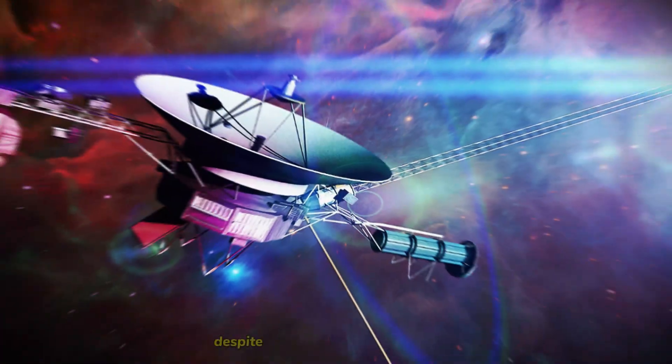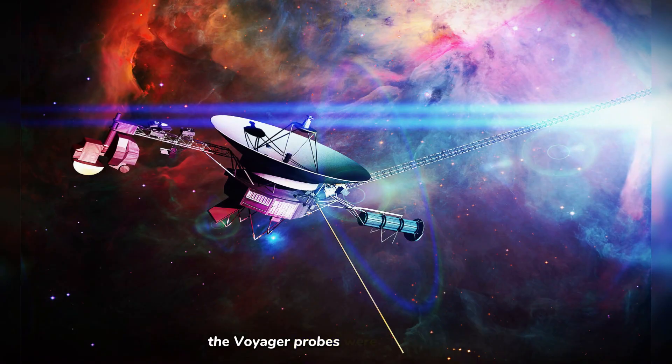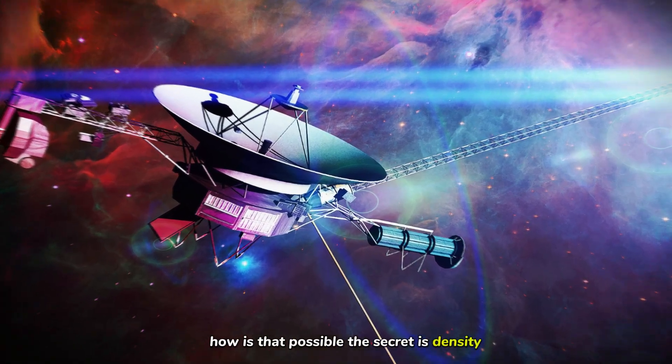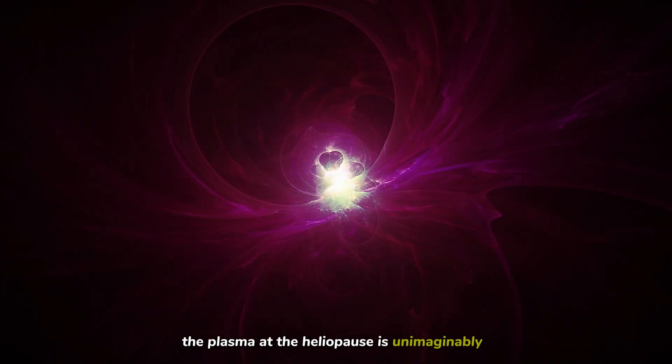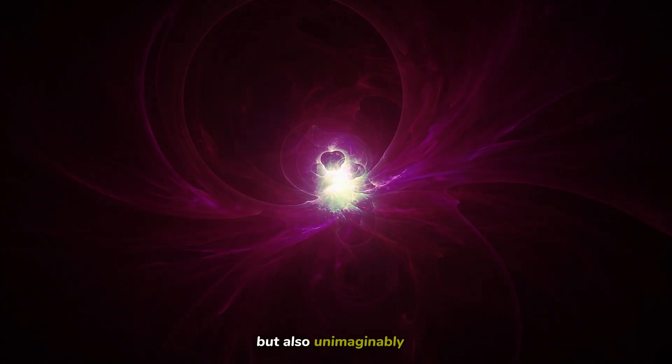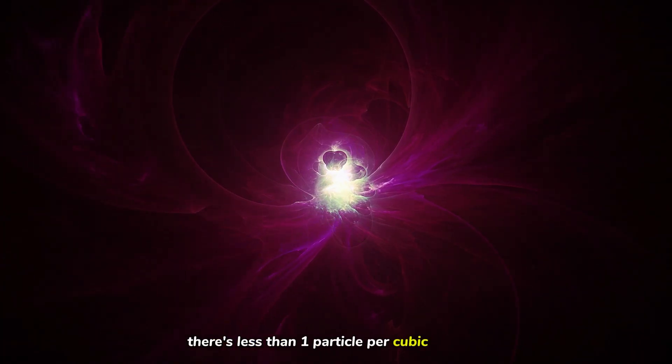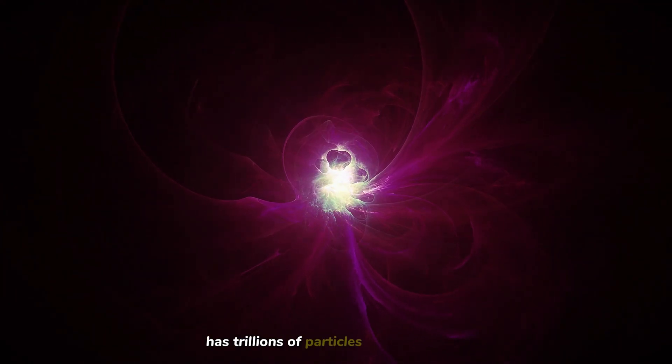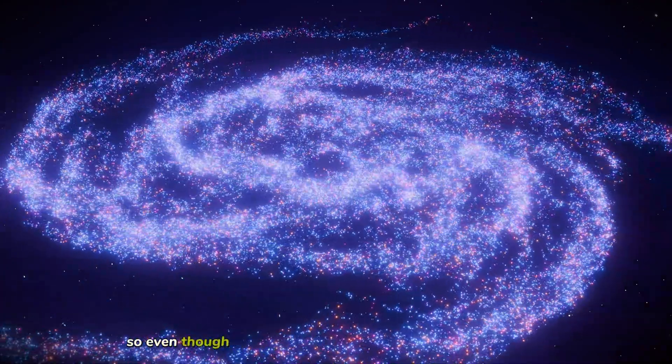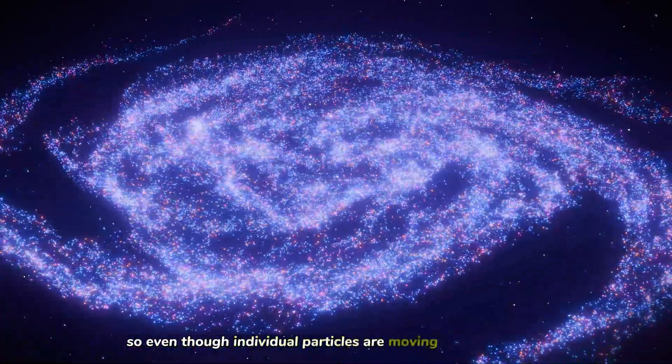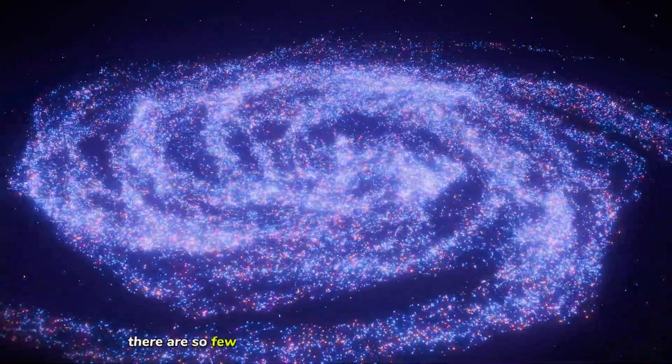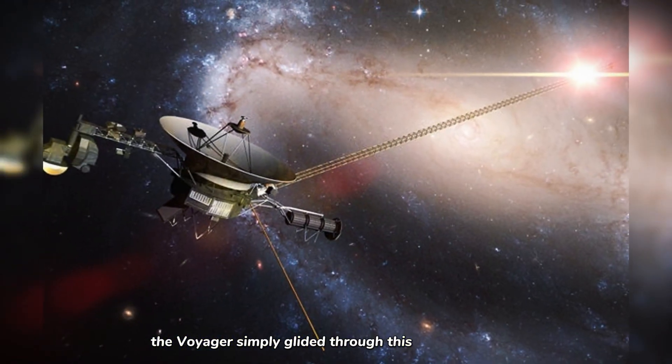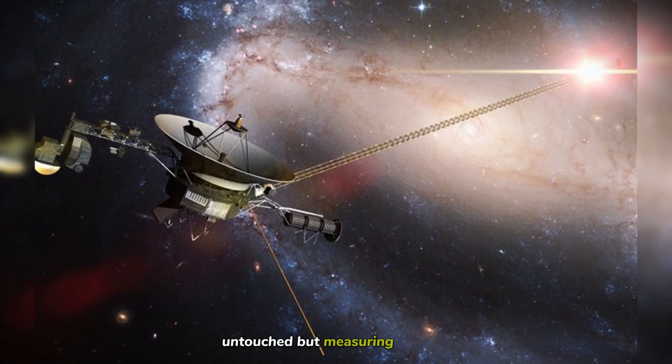But here's the strange part. Despite these apocalyptic temperatures, the Voyager probes were completely fine. How is that possible? The secret is density. The plasma at the heliopause is unimaginably hot, but also unimaginably thin. There's less than one particle per cubic centimeter. For comparison, the air you're breathing right now has trillions of particles in the same space. So even though individual particles are moving at extreme speeds, there are so few of them that they can't transfer meaningful heat. The Voyagers simply glided through this inferno like ghosts, untouched but measuring everything.